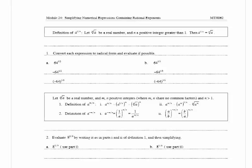For number 1, it wants us to convert each expression to radical form and evaluate if possible. We have 64 to the 1 half, and we can rewrite that as the square root of 64, which is equal to 8.